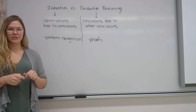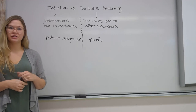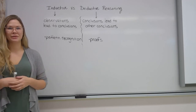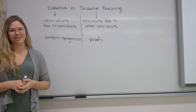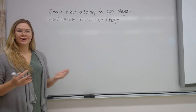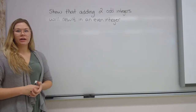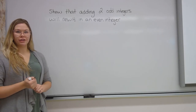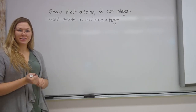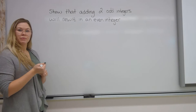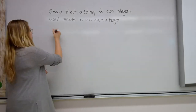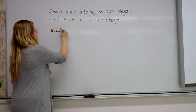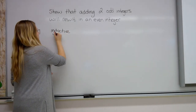So what we're going to talk about now is a couple of examples, and I'm going to show you how we can show patterns using inductive reasoning and then how we can prove them using deductive reasoning. Here's our first example: show that adding two odd integers will result in an even integer. Let's use inductive reasoning first — we're going to base it on observations. We're going to take two odd integers and add them together.